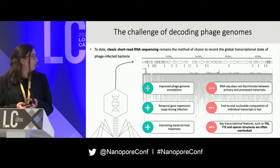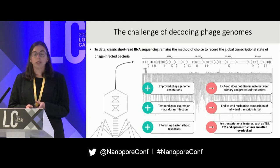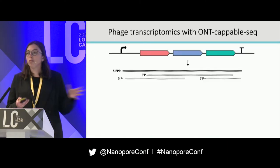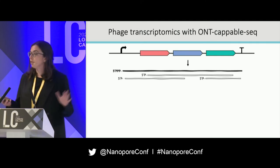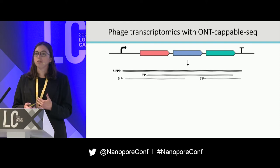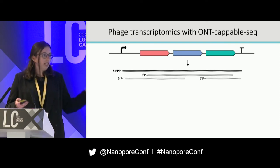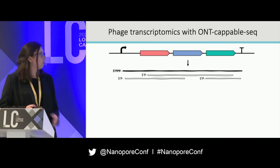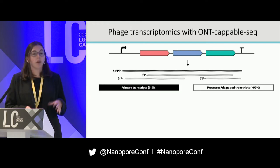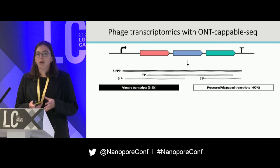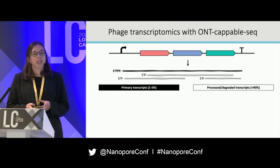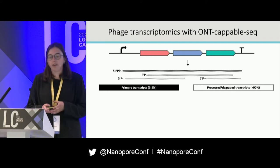That is why we are very interested in primary transcripts — transcripts that did not undergo any form of processing or degradation and therefore still have their original transcriptional boundaries. This makes them interesting for figuring out initiation and termination sites of transcription. However, they only make up a tiny fraction of the RNA population within a bacterial cell, so we needed ways to enrich this population in our RNA sample.